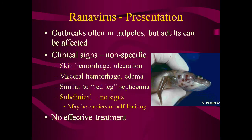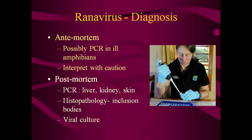Some animals may show no outward signs and either carry the virus or clear it without becoming ill. Unfortunately, there is no effective treatment. Diagnosis in live animals may be difficult. Many labs may run a PCR test on samples such as swabs, scrapings, or discharges obtained from a live frog, but the results should be interpreted with caution. A negative result does not necessarily mean the animal does not have the virus, as the tests are designed for tissues and the virus may not be present in the types of samples easily obtained from live animals. A positive result in light of compatible clinical signs may be significant, but it is probably not helpful in healthy specimens. Diagnosis on post-mortem samples may include both PCR of tissue samples and histopathology to confirm the presence of compatible lesions, including viral inclusion bodies. A viral culture can be performed, but most labs do not have the proper cell lines and environmental parameters to culture these viruses well.